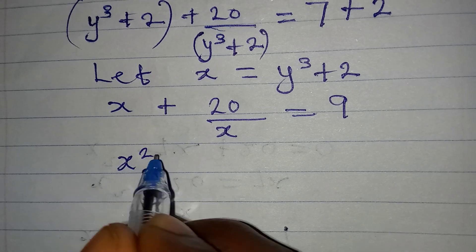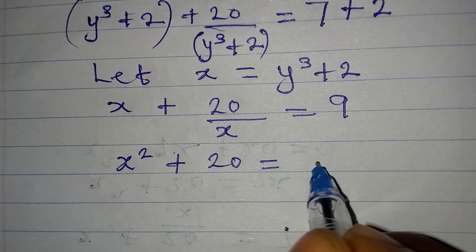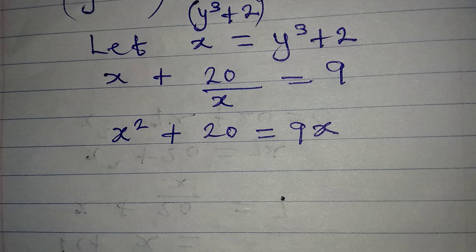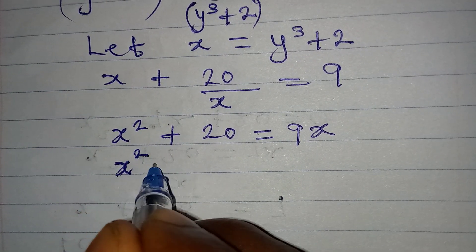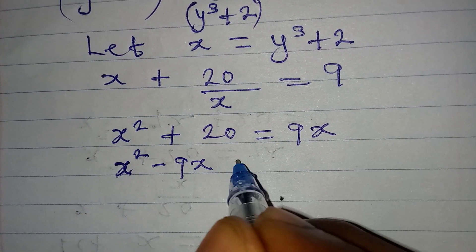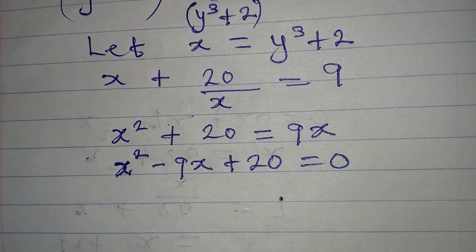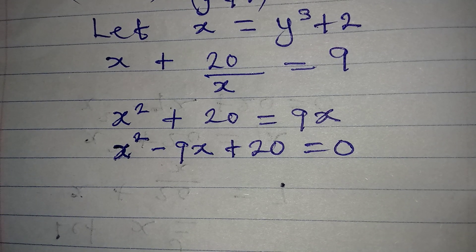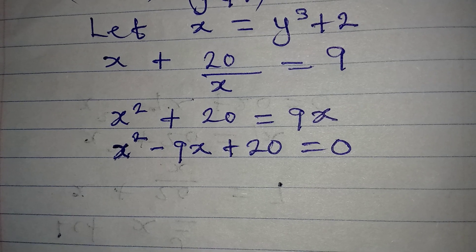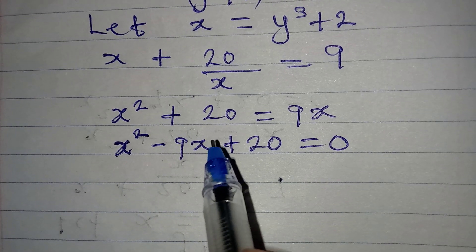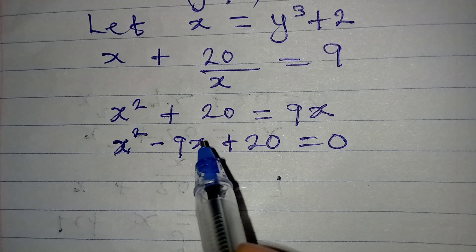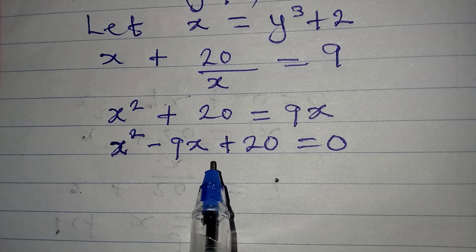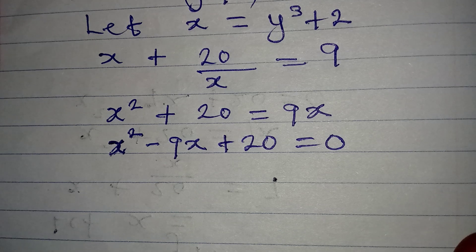Clearing out the fraction, we have x² + 20 equal to 9x. Arranging this properly as a quadratic equation, we have x² - 9x + 20 = 0. We can solve this by factorization, though sometimes it can be difficult to apply the factorization method because you have to think of the right numbers to use.